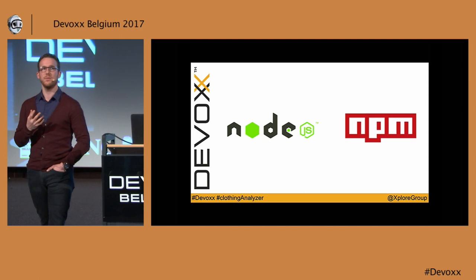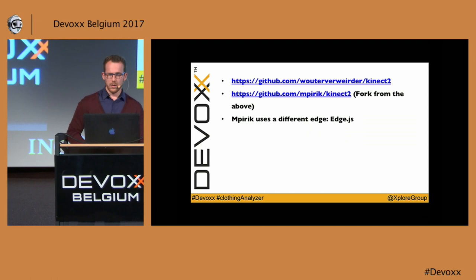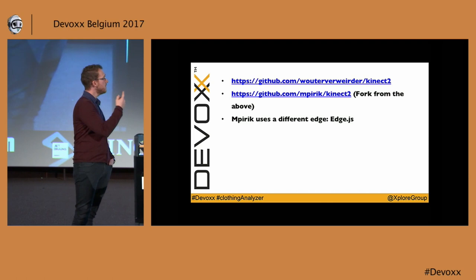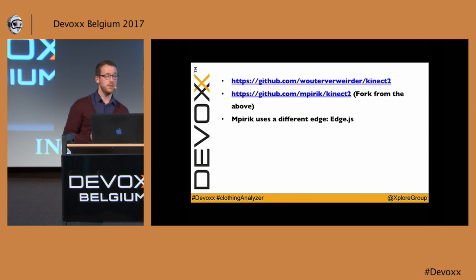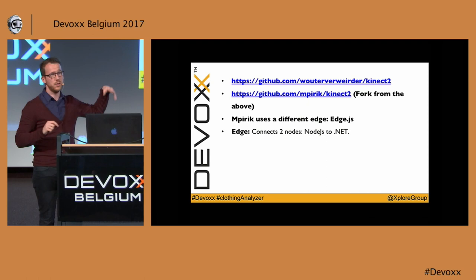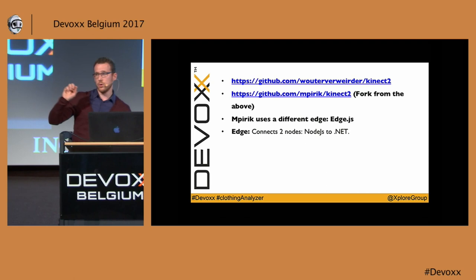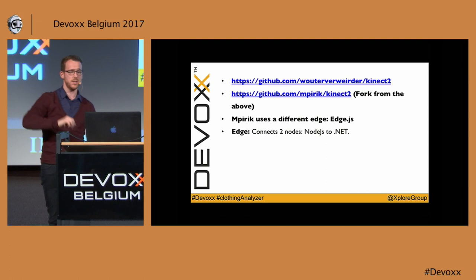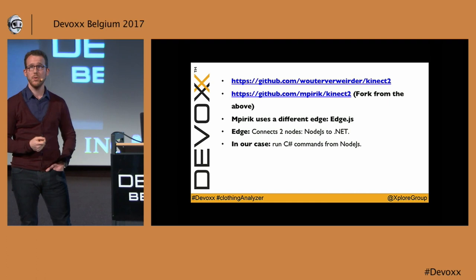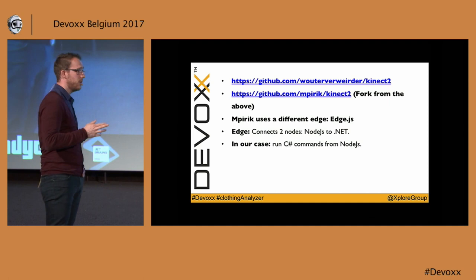I searched the web for a Node or NPM module that would bridge the gap, not thinking anyone had done it before. But thankfully there was. There are two GitHub repos — the second being a fork of the first — and we used the second because it uses edge.js. In short, edge.js connects two nodes: Node.js and .NET. It bridges the gap between two processes so your Node.js environment can call .NET functions and vice versa. In our case, it had to run a C# command from Node.js, because the Kinect SDK code in the repo was in C#. Fingers crossed, and eventually it worked.